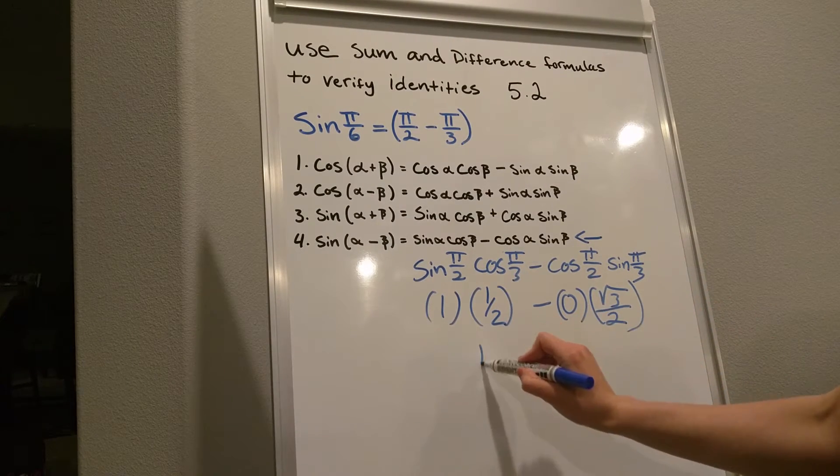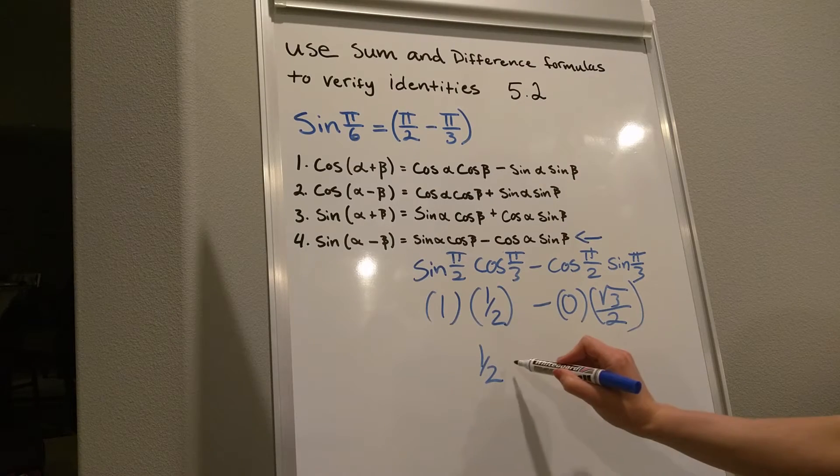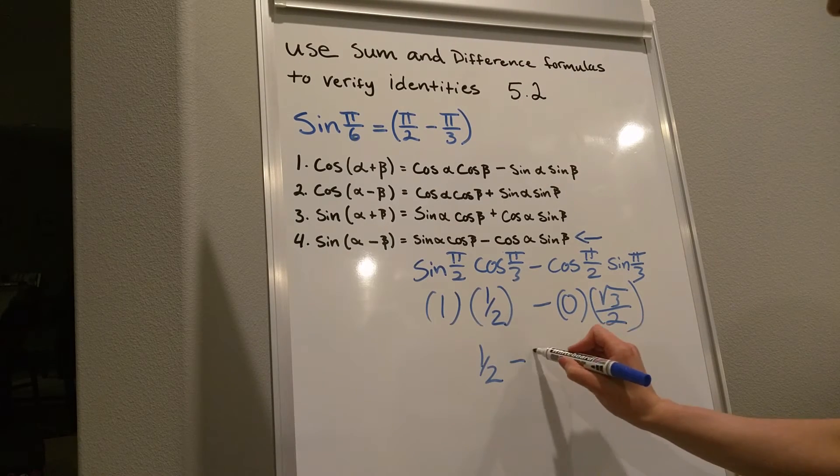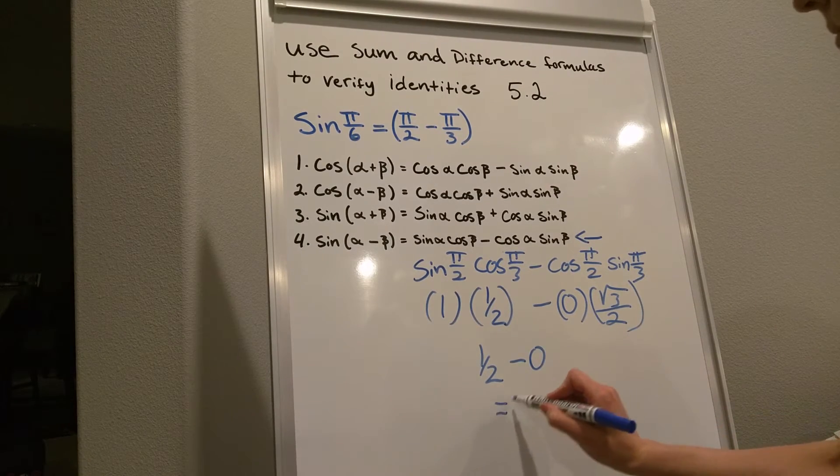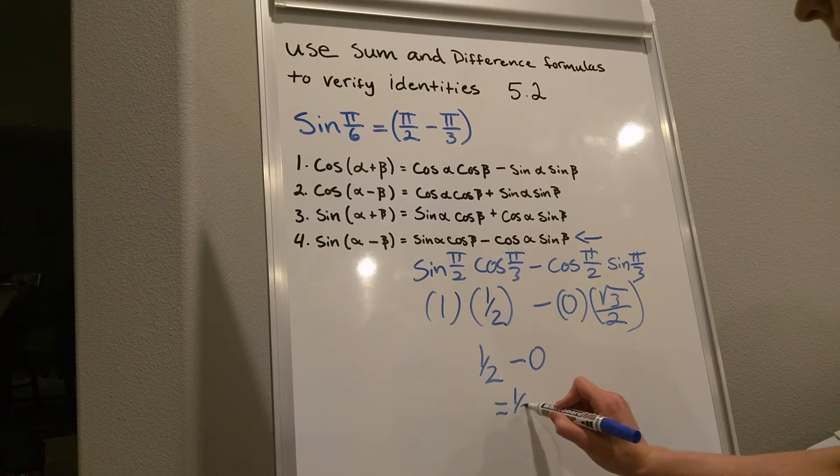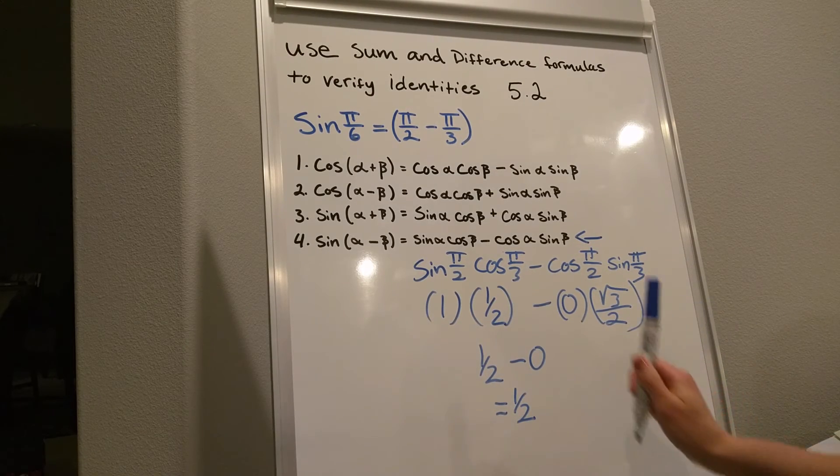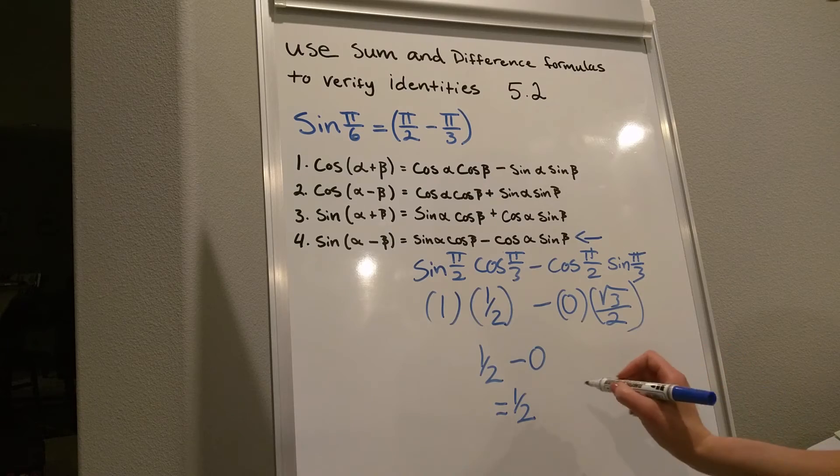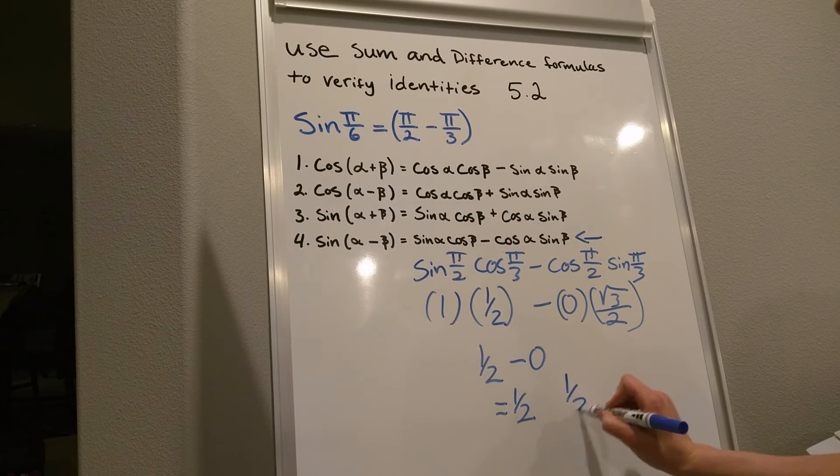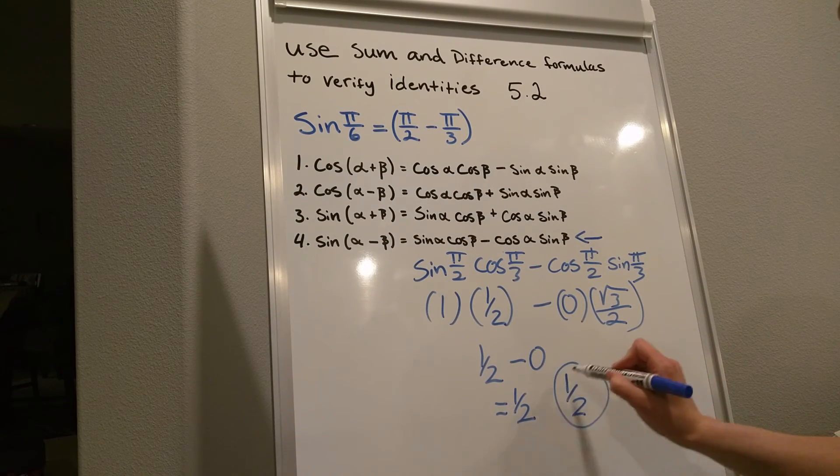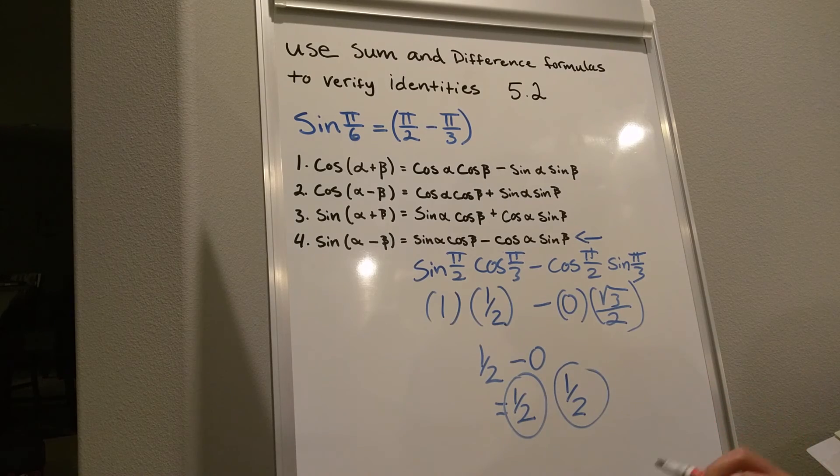So let's simplify this. We have 1 half minus 0, and that gives us 1 half. And if you look at sine pi over 6, that also equals 1 half. So yes, they are equal.